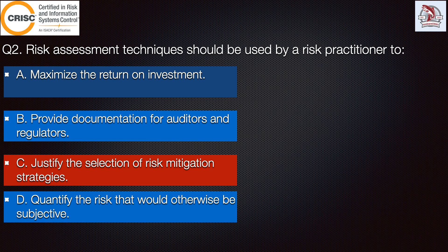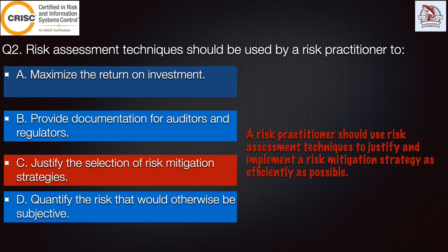Option B: provide documentation for auditors and regulators — this is incorrect because a risk assessment does not focus on auditors or regulators as primary recipients of the documentation, though risk assessment results may provide input into the audit process. Option C is correct because the risk practitioner should use risk assessment techniques to justify and implement a risk mitigation strategy as efficiently as possible.